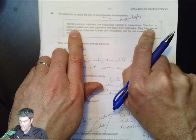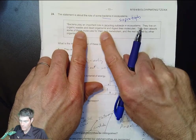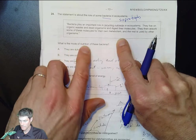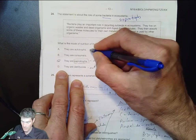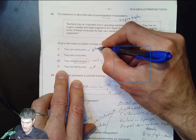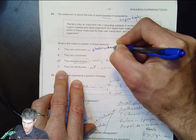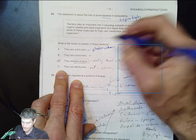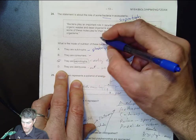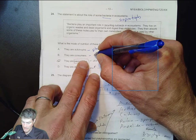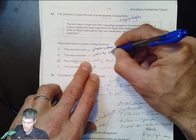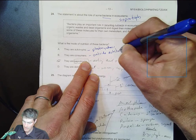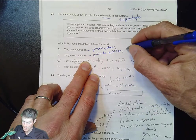Important role in recycling. Mode of nutrition: remember autotrophs do photosynthesis, then you have consumers taking in outside nutrition, having to eat things.